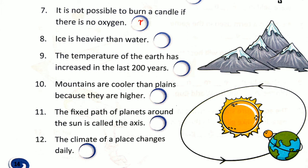Number 8: Ice is heavier than water. This is false — water is frozen to form ice. Number 9: The temperature of the earth has increased in the last 200 years. This is true. Number 10: Mountains are cooler than the plains because they are higher. This is true. Number 11: The fixed path of the planets around the sun is called an axis. This is false. Number 12: The climate of the plains changes daily. This is false — weather changes daily, not climate.